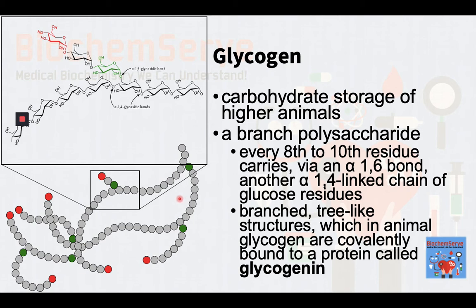On the average, every 8th to 10th residue carries, via an alpha-1,6 bond, another 1,4-linked chain of glucose residues. This gives rise to branched, tree-like structures, which in animal glycogen are covalently bound to a protein called glycogenin.